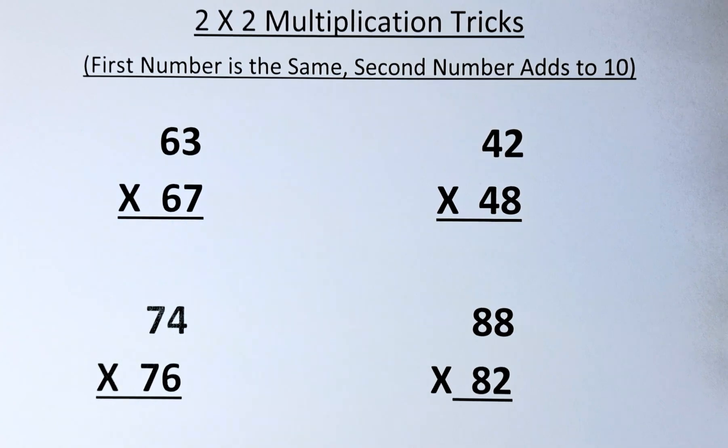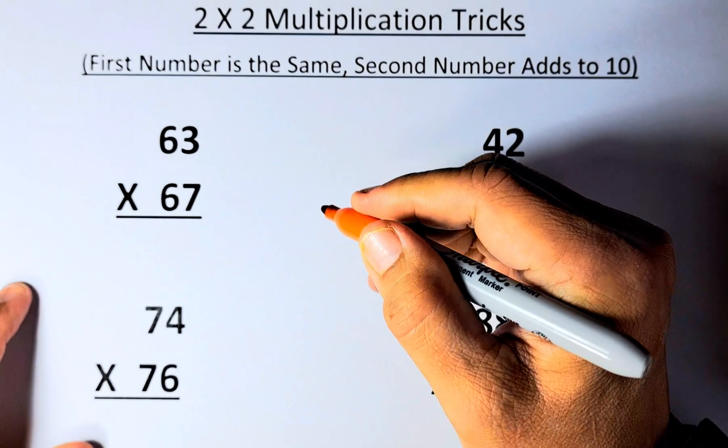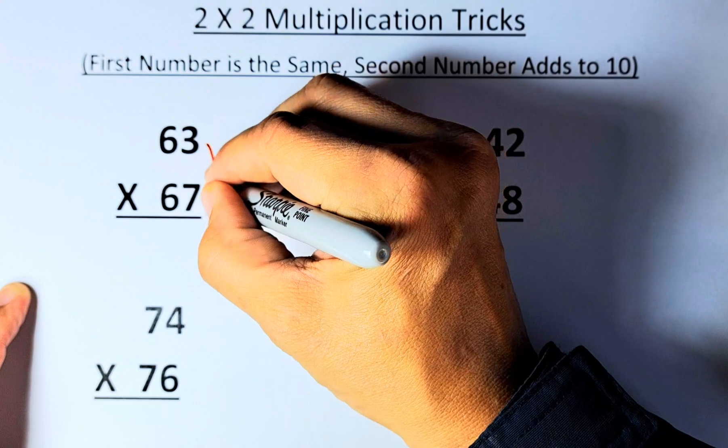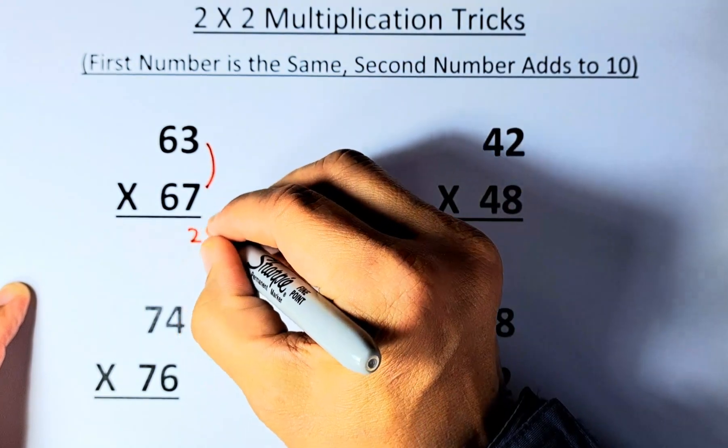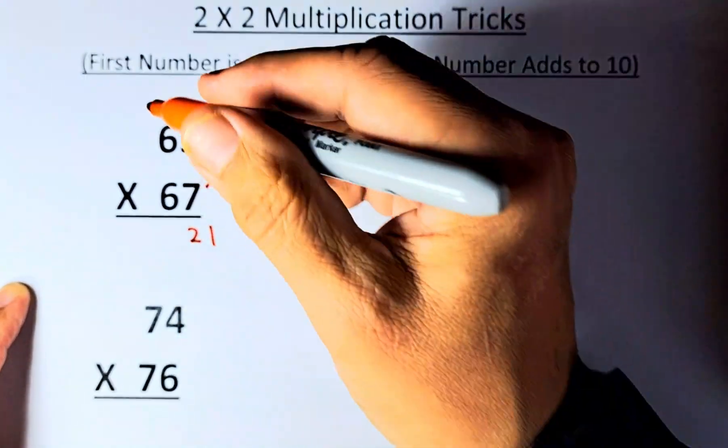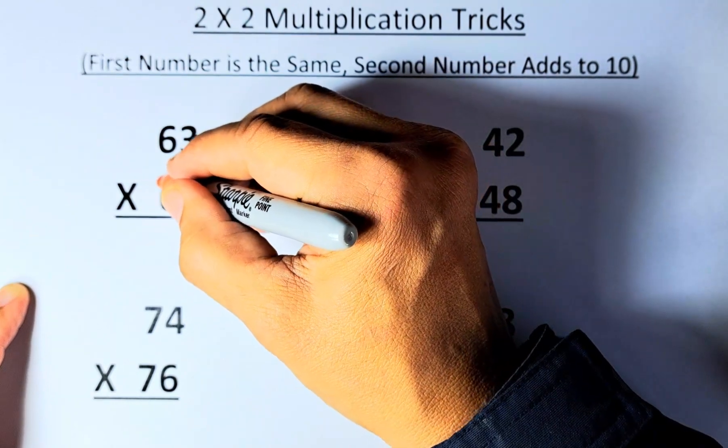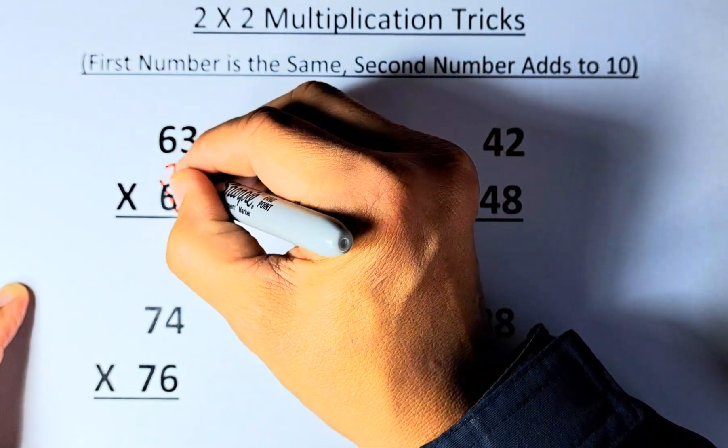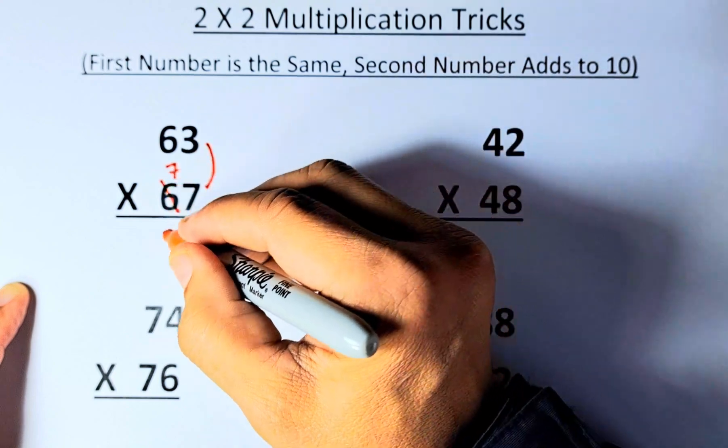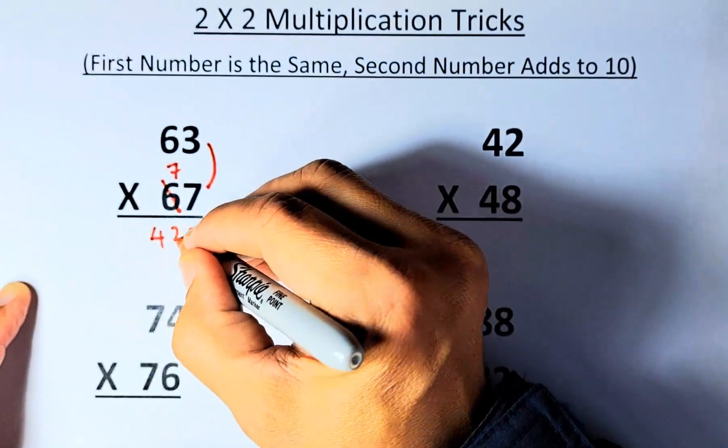63 x 67. So what you do is multiply 3 x 7, that will give you 21. Now, you're going to multiply 6 x 6, but instead of 6 x 6 you're going to increase that number to 7. So 6 x 7 is 42 and that's the answer.